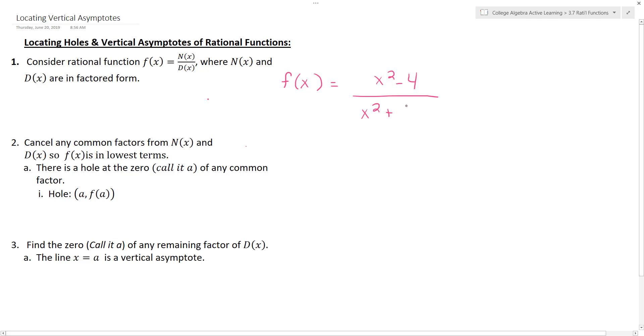When considering the holes and vertical asymptotes of a rational function, you want to start off by getting both the numerator and the denominator in factored form. So we're going to start with the numerator. We have this difference of squares, so we should automatically know how to factor that.